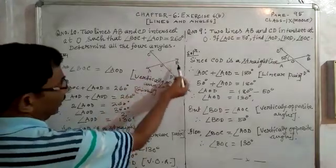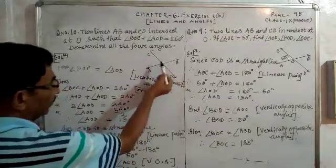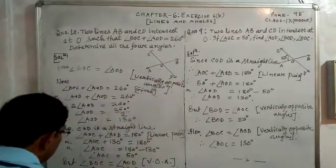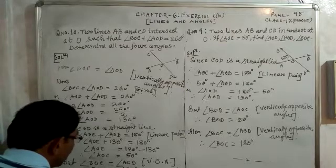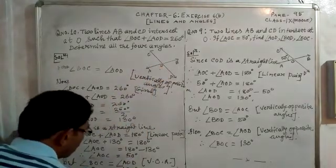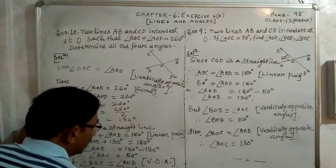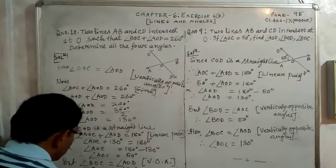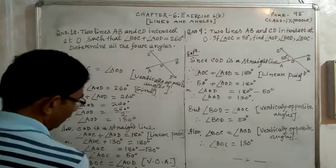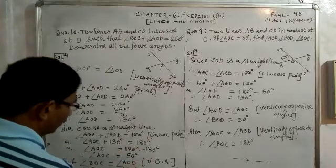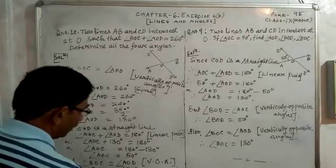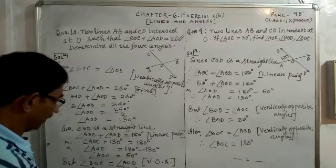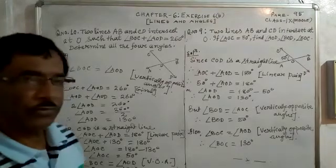Also, angle AOC and angle BOD are vertically opposite angles, so BOD equals AOC, which is 50 degrees. We write: angle BOD is equal to angle AOC, equal to 50 degrees, because they are vertically opposite angles. So all four angles are: angle AOD equals 130 degrees, angle AOC equals 50 degrees, angle BOC equals 130 degrees, and angle BOD equals 50 degrees.